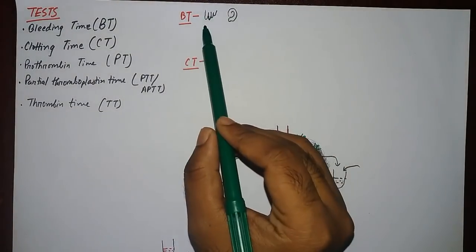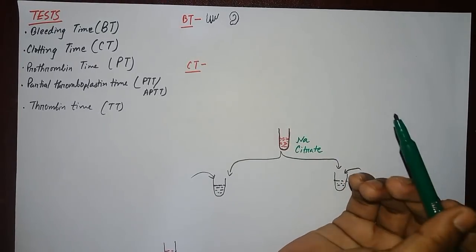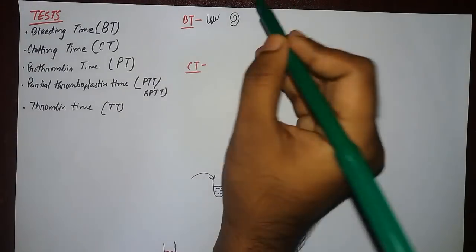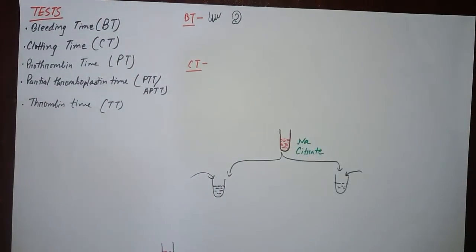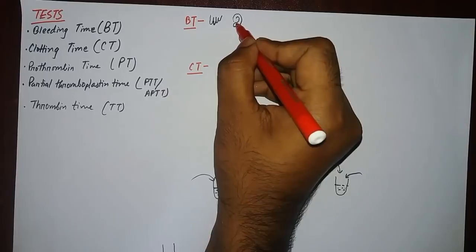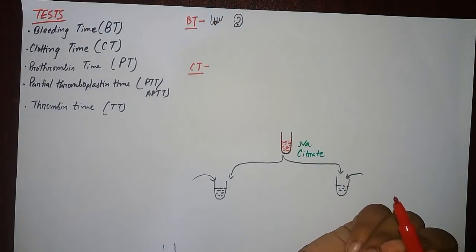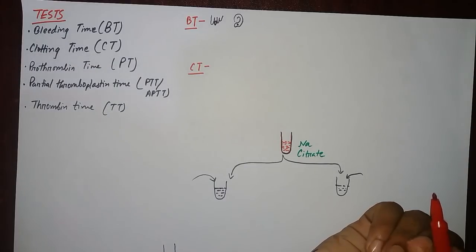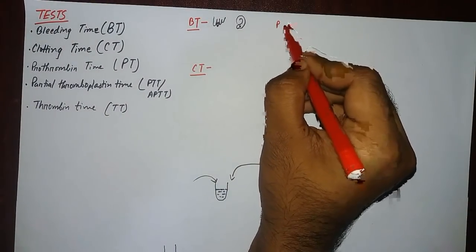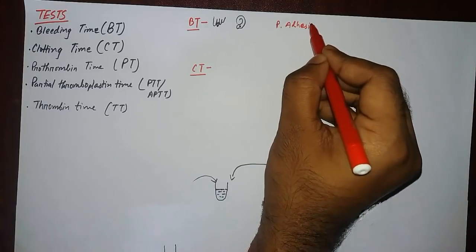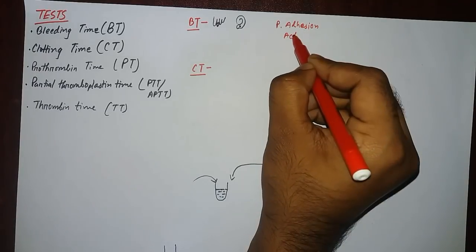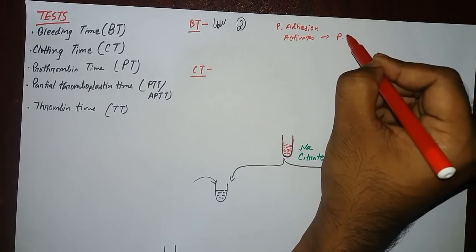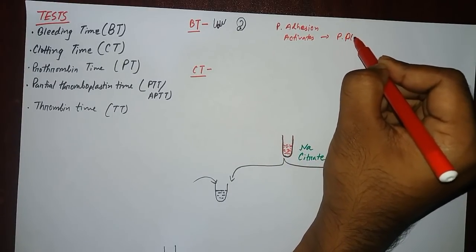First, we will talk about bleeding time. Bleeding time is the time required after a skin puncture to stop bleeding. For example, we puncture the skin of the ear lobule or the fingertip — then normally it bleeds, but after some time there is platelet addition and platelet activation.